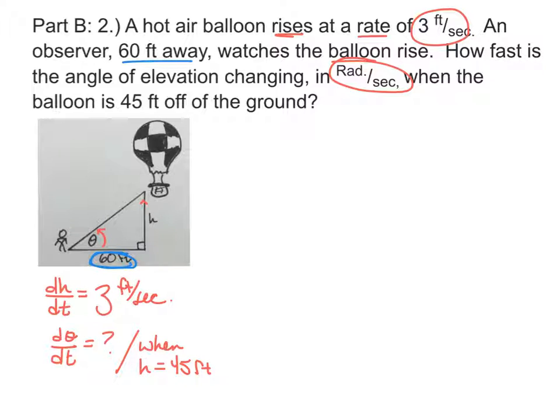And when I look at that triangle and I try and relate an angle with the opposite side and the adjacent side, to me that sounds like tangent. The tangent of theta is h over 60.